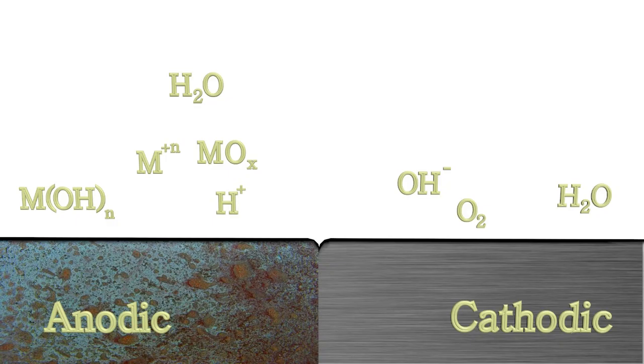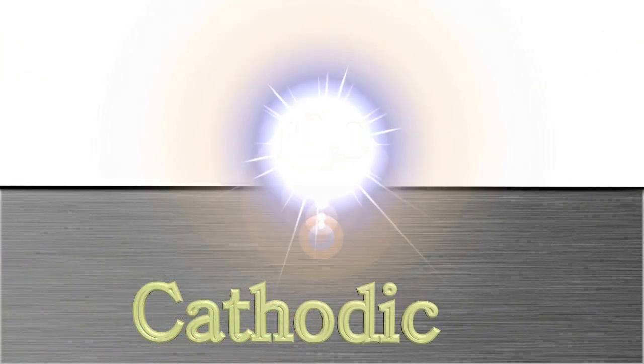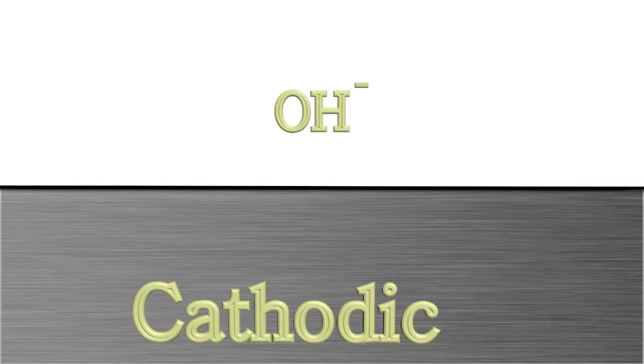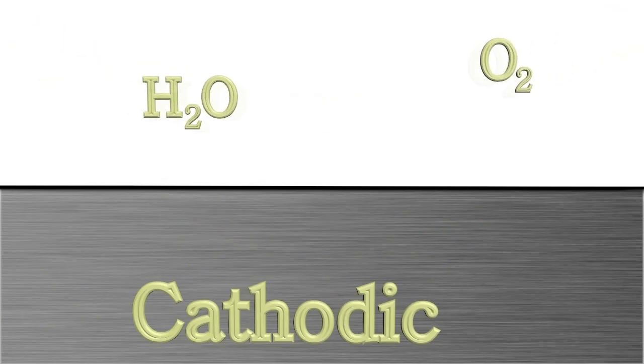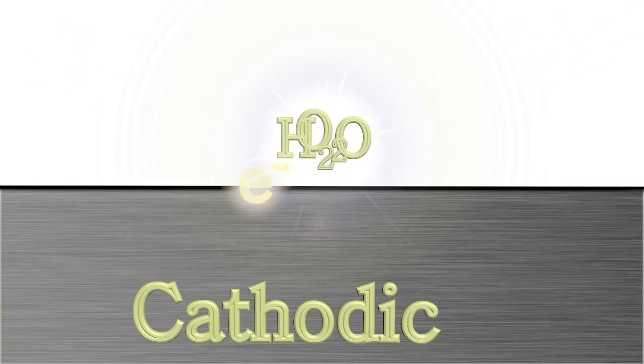As a result, different chemical reactions start taking place at the sample surface. At the cathode, water reacts with oxygen and hydroxide ions are generated. However, this reaction is only possible if it gets excess electrons from somewhere.